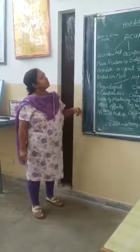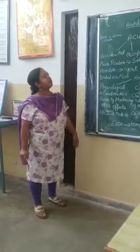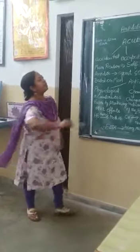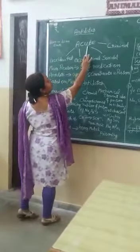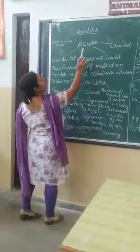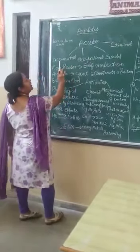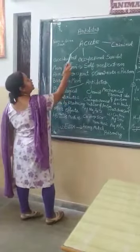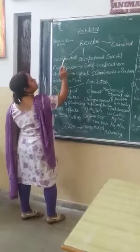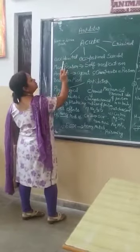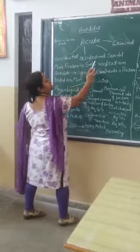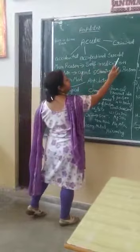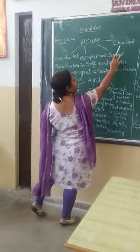Poisoning is mainly acute poisoning, and acute poisoning is of four types: accidental, occupational, suicidal, and criminal.